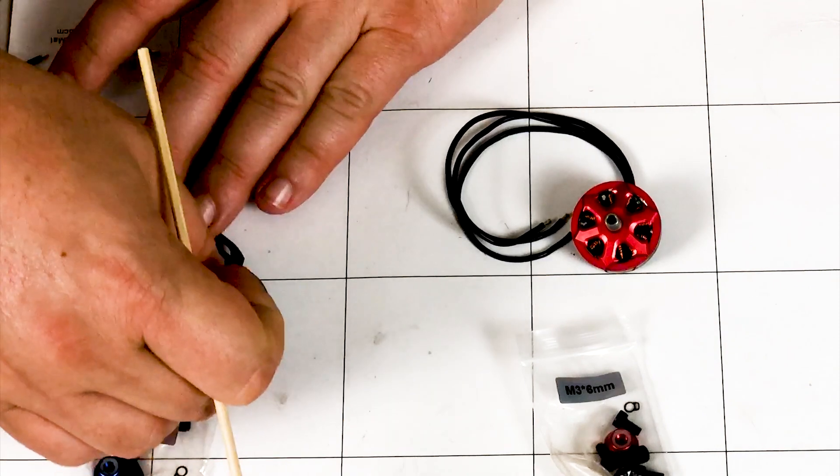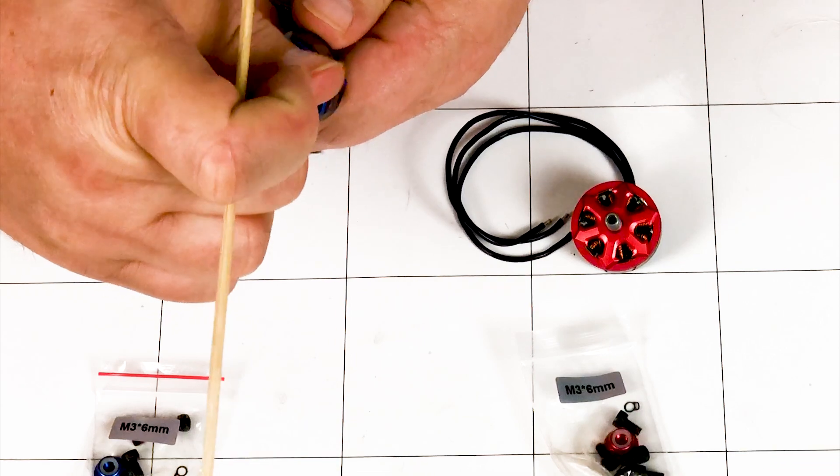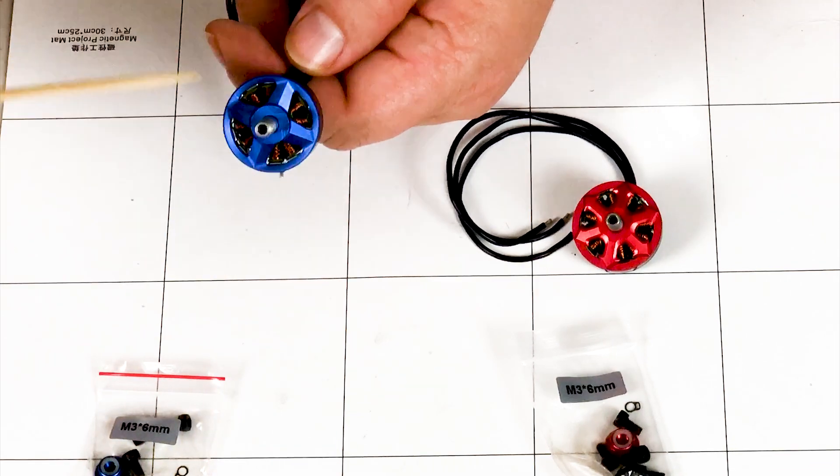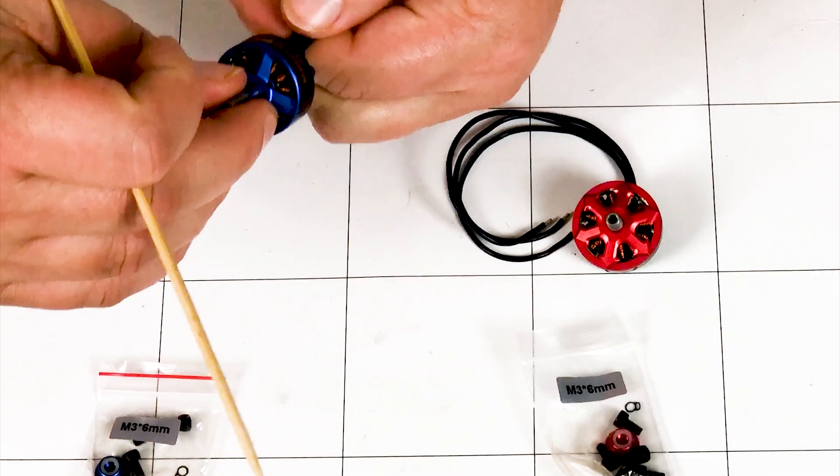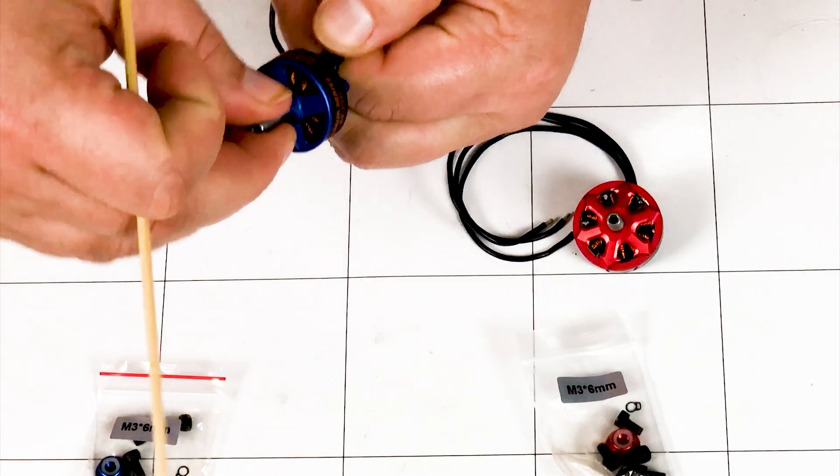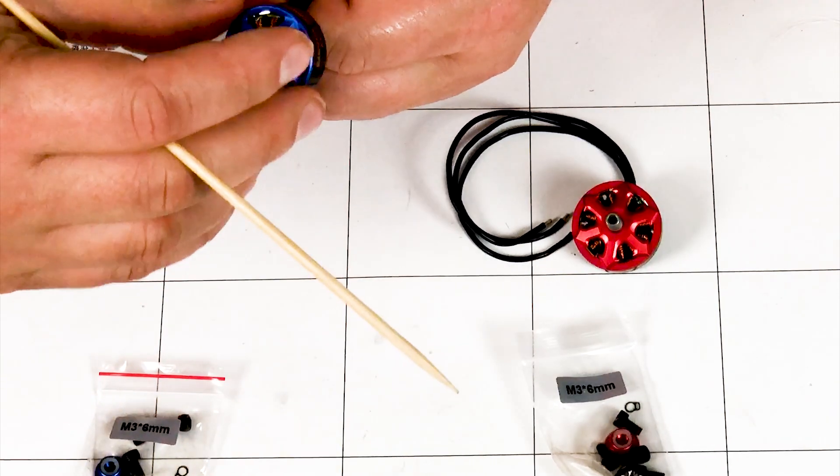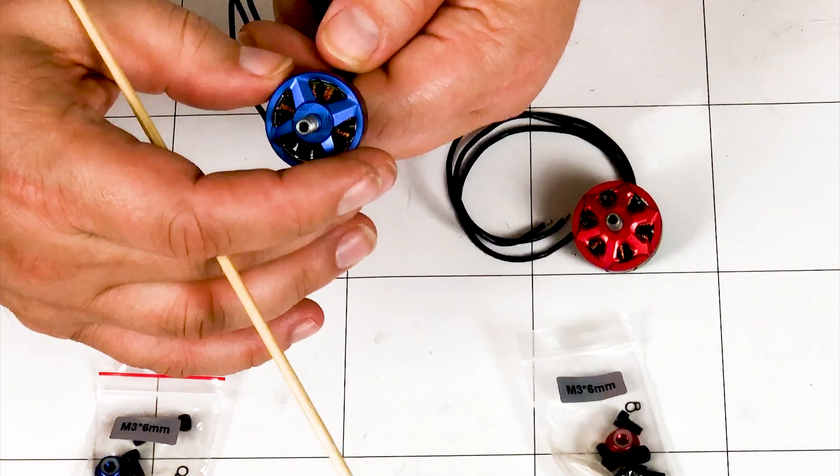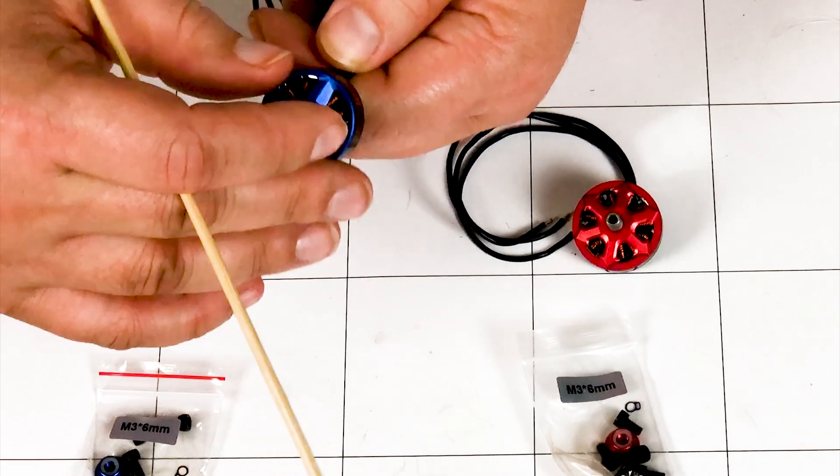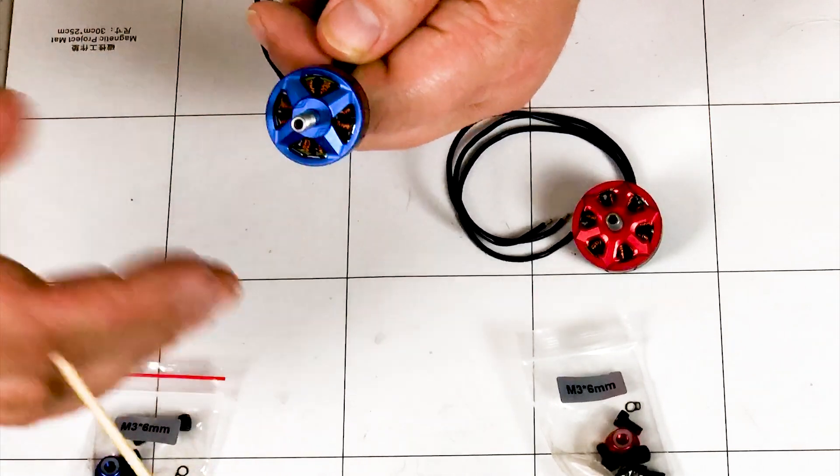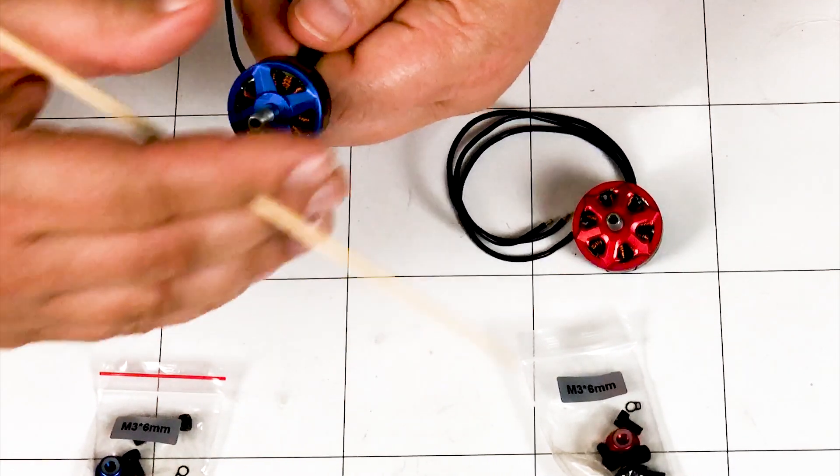When you spin it by hand, it doesn't have a very coggy feel to it, but it does have a pretty smooth feel to it. If you have powerful magnets and you turn this motor and it feels very coggy, like there's a notch, like doop, doop, doop, doop, doop, that means that that motor is going to have a lot of power, but it also means it's not going to be a very smooth motor because it's obviously going to take a lot of energy to get that motor to turn off of that one magnet onto the next one.